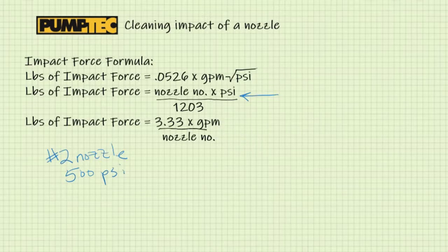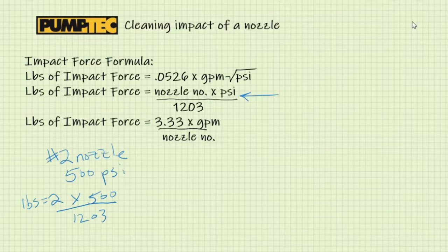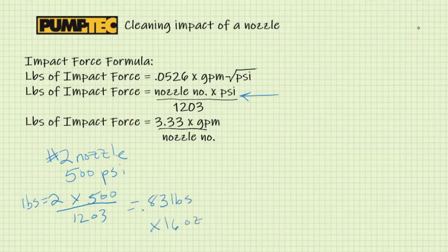Let's calculate this out. Pounds equals two times 500 over 1203. It equals 1,000... it's going to be less than 13.3 ounces.